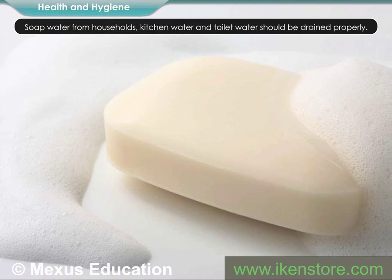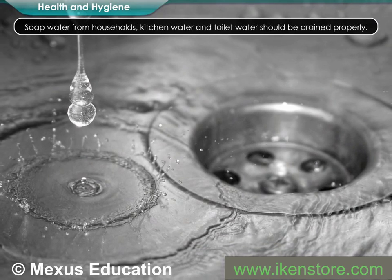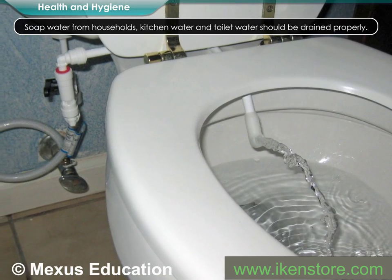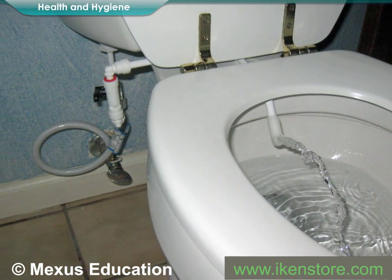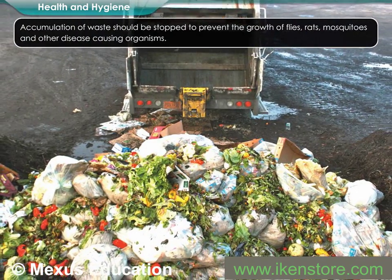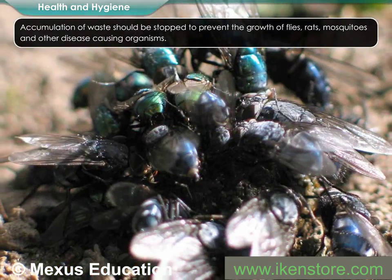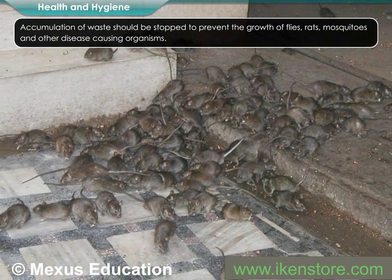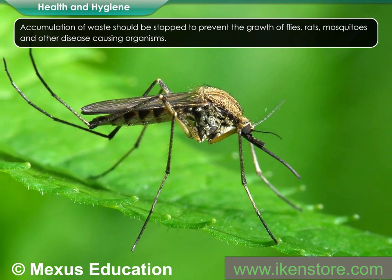Soap water from households, kitchen water, and toilet water should be drained properly. Accumulation of waste should be stopped to prevent the growth of flies, rats, mosquitoes, and other disease-causing organisms.